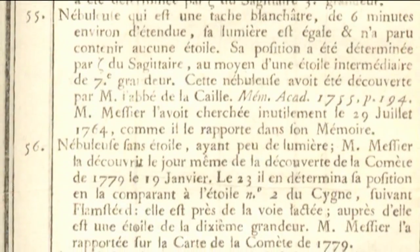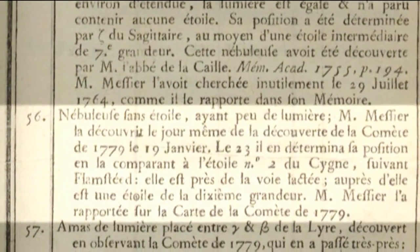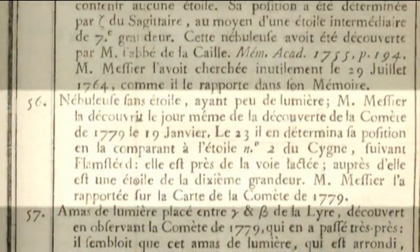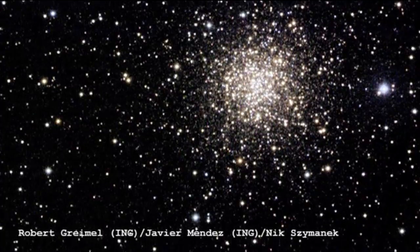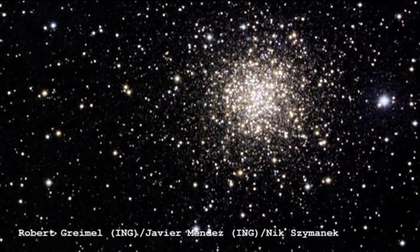Clearly, by this point, Messier was well into his catalogue — the 56th one he came across. This is actually one that he discovered for himself, at the same time as finding a comet. Messier never resolved it into stars; he just saw it as a diffuse nebula. A little later, William Herschel came along and took rather better observations of it and was able to say, actually, this is a globular cluster — one of these little round clusters of stars.